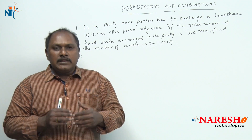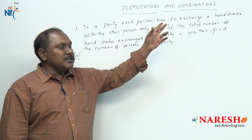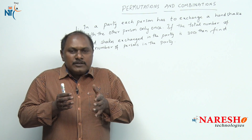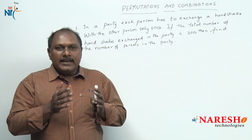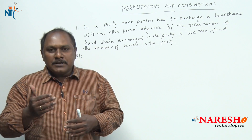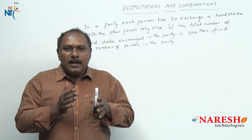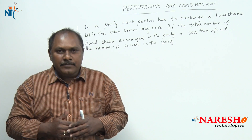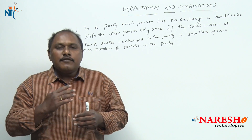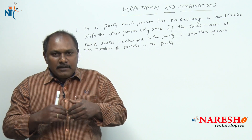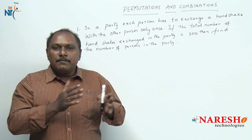First, let us look into how to solve this problem without using permutations and combinations. Taking a small example: if there are 50 persons in a party, the first person will exchange handshakes with all other persons except himself, that means with 49 persons. The second person will exchange handshakes with 48 persons — except himself and the first person — because he has already exchanged a handshake with the first person.